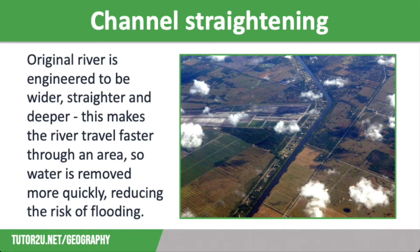Channel straightening can also improve navigation, which improves travel and trade links. Local properties are protected, which lowers home insurance premiums in the area. However, water is fast-flowing through the straightened sections and has to slow down considerably when it starts to bend downstream. This loss of energy causes deposition, and sedimentation can increase the risk of flooding and the need for dredging.